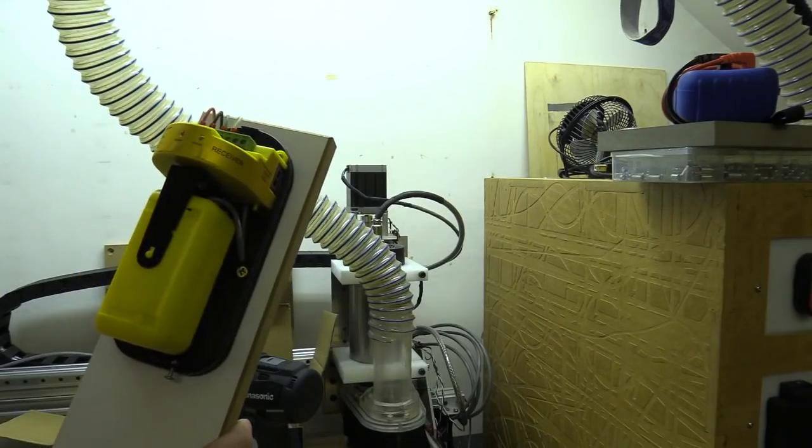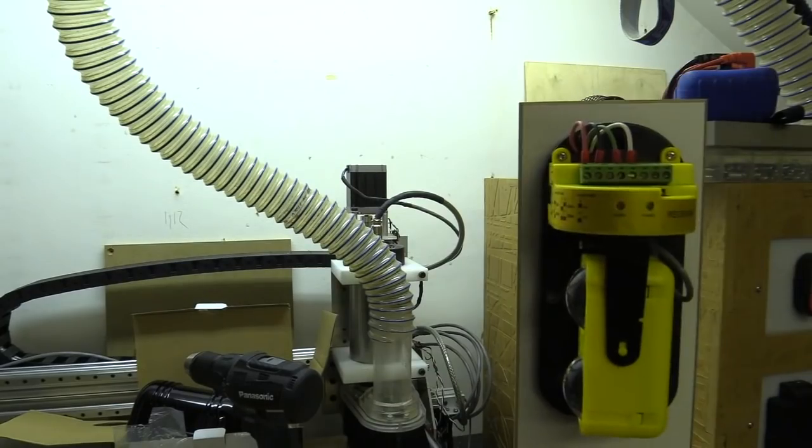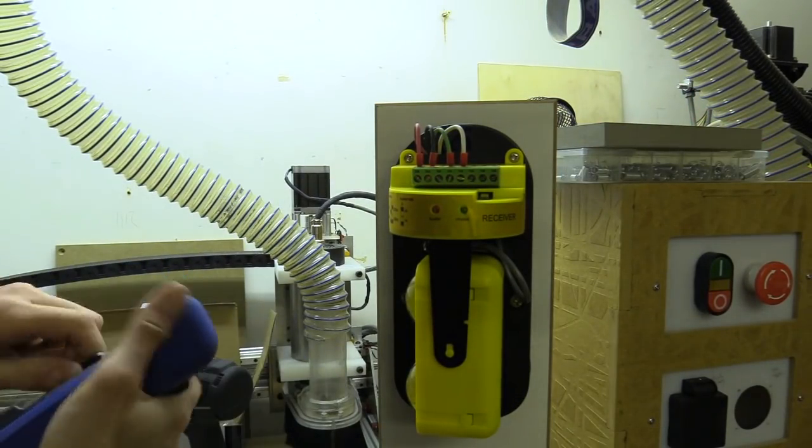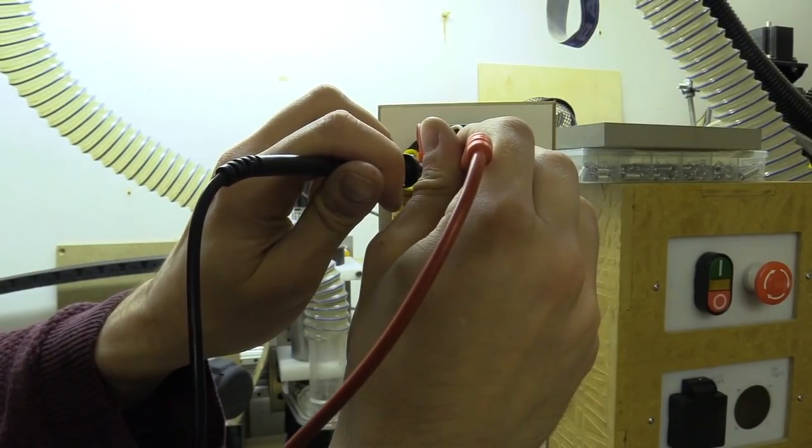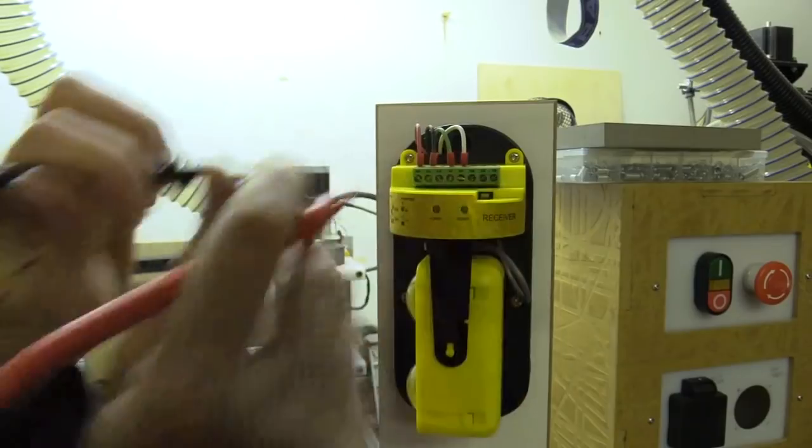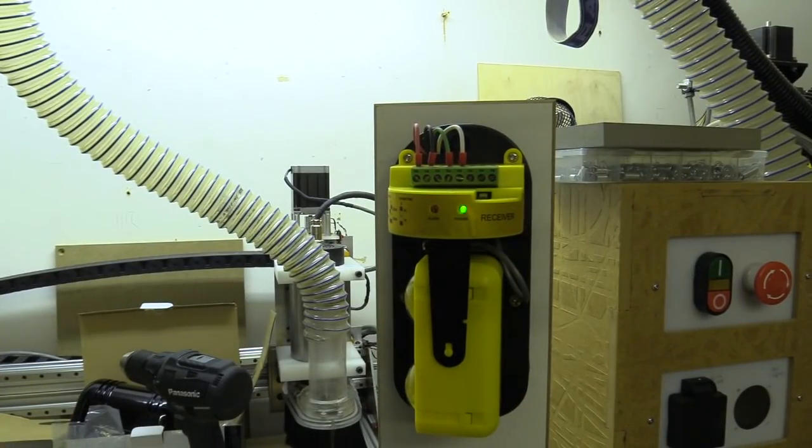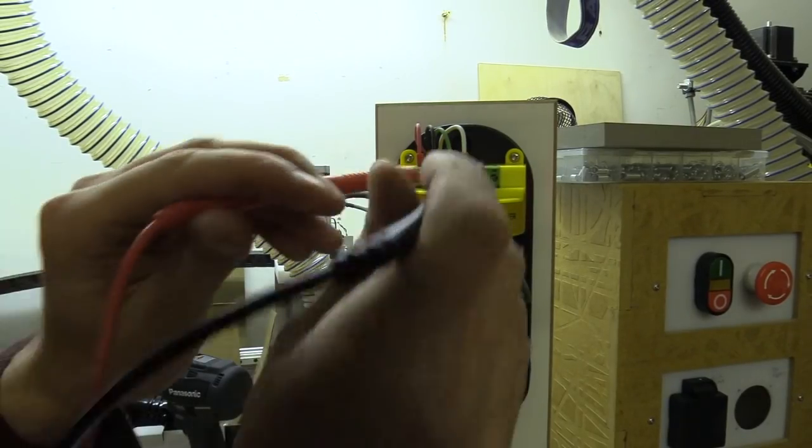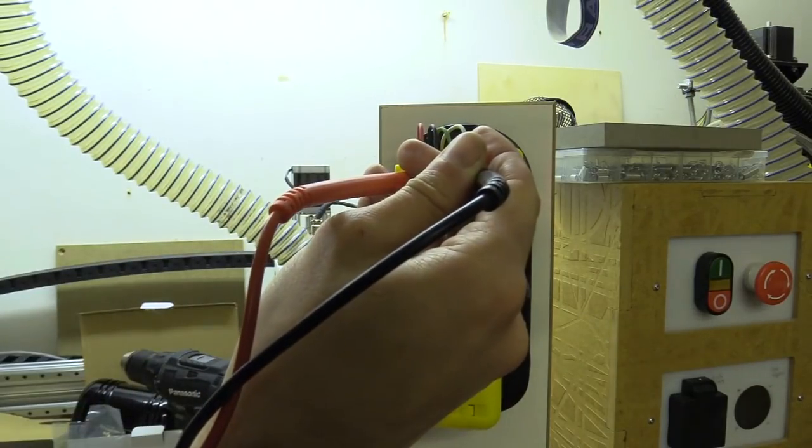Although if I grab the voltmeter and put it on continuity, normally closed is actually normally open. I'm just going to turn the power on. OK so that's closed now that the power is on.